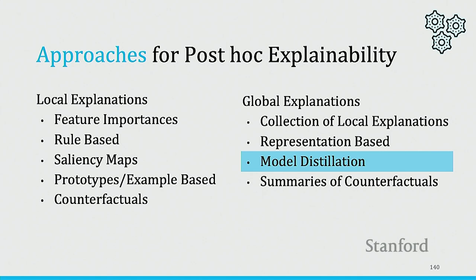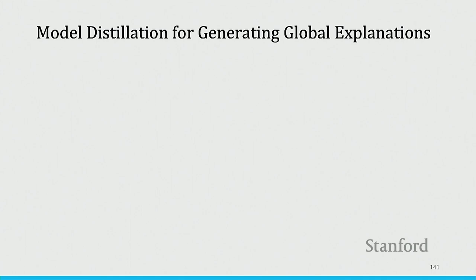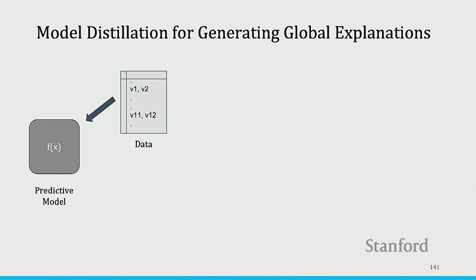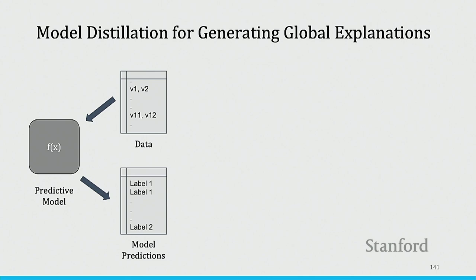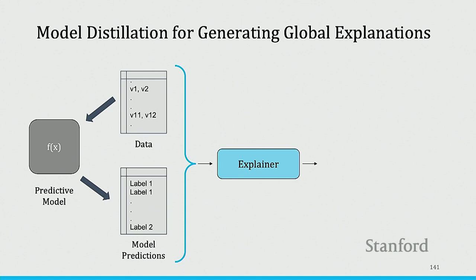The next class is model distillation, which has been around for quite a long time and is popular especially in tabular data environments. The goal is: you have a predictive model f(x) you want to explain globally. You have a bunch of data points you can query through this model, get the predictions, and then pass this through an explainer algorithm.